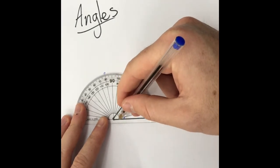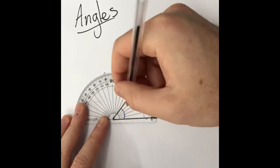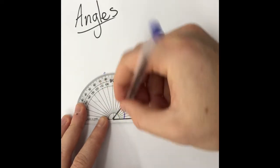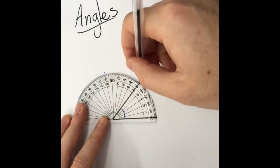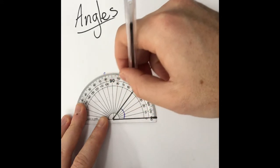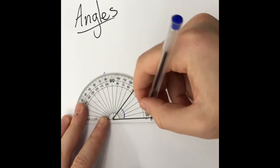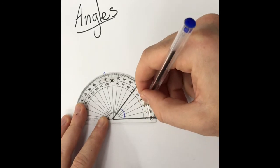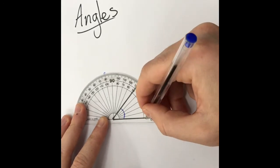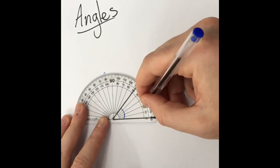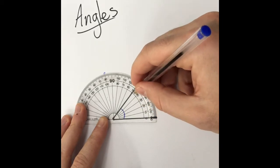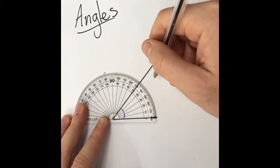I'm measuring in here, and then I see at what point the other line goes outside. I'm going to start from here and then count up the way, so 0, 10, 20, 30, 40, 50 degrees.